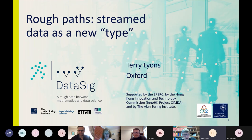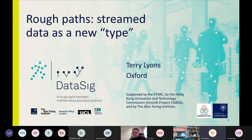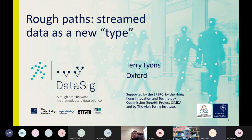Thank you very much for having me here today. I want to talk about something which spans at least a decade of thinking — really, how to represent stream data. Many of you have heard vaguely about rough path theory, but at the heart of rough path theory is exactly this question: how should you describe complex multimodal evolving data? That's what I mean by stream.